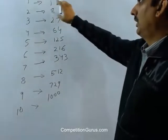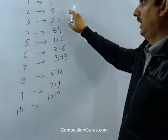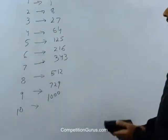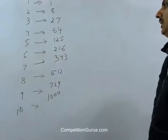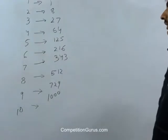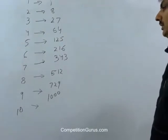So remember: cube of 1 is 1, cube of 2 is 8, cube of 3 is 27, cube of 4 is 64, cube of 5 is 125, cube of 6 is 216, cube of 7 is 343, cube of 8 is 512, cube of 9 is 729, cube of 10 is 1000.